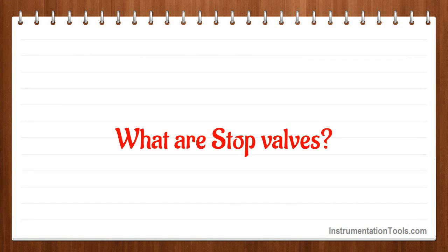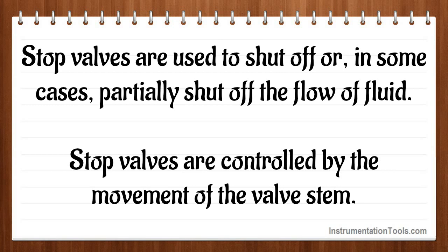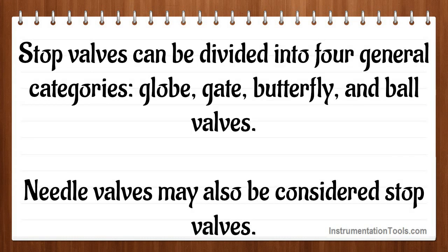What are stop valves? Stop valves are used to shut off or, in some cases, partially shut off the flow of fluid. Stop valves are controlled by the movement of the valve stem. Stop valves can be divided into four general categories: globe, gate, butterfly, and ball valves. Needle valves may also be considered stop valves.